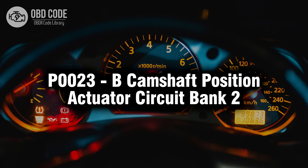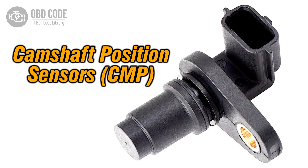Welcome. In this video we will talk about code P0023, its symptoms, causes and possible solutions. The P0023 trouble code relates to the camshaft position actuator circuit in bank 2. It points to a potential issue with the camshaft position actuator in the second bank.